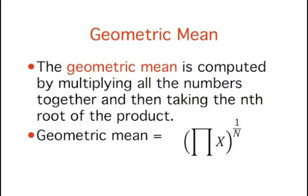The second measure of central tendency we'll explore in this section is the geometric mean. It is computed by multiplying all the numbers together and then taking the nth root of the product. The equation for the geometric mean says to multiply all the values of x, where the pi symbol means to multiply, and then to raise the result to the 1 over nth power. n is the number of numbers in the distribution.